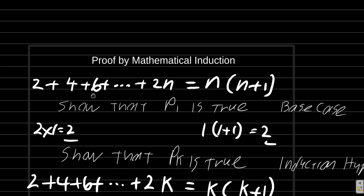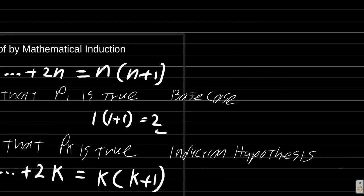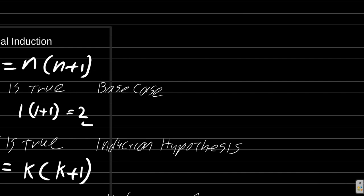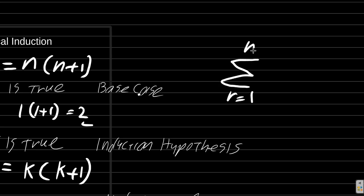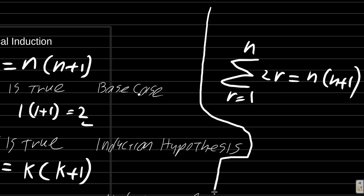The sum 2 plus 4 plus 6 plus ... plus 2n could be written as the sum from r equals 1 to n of 2r equals n times n plus 1. Let me just draw a line to separate the work here.